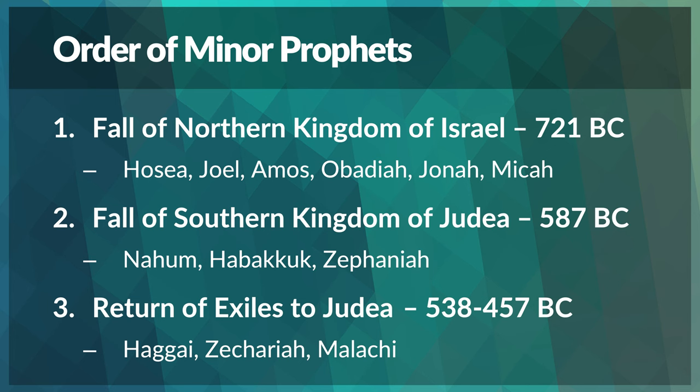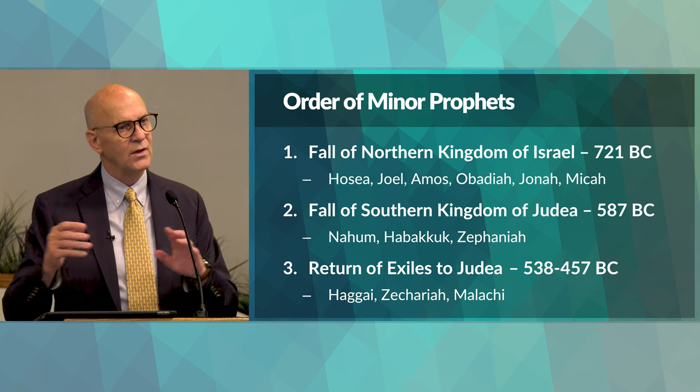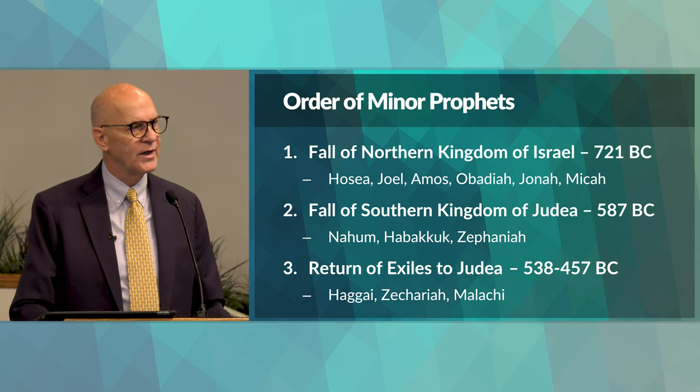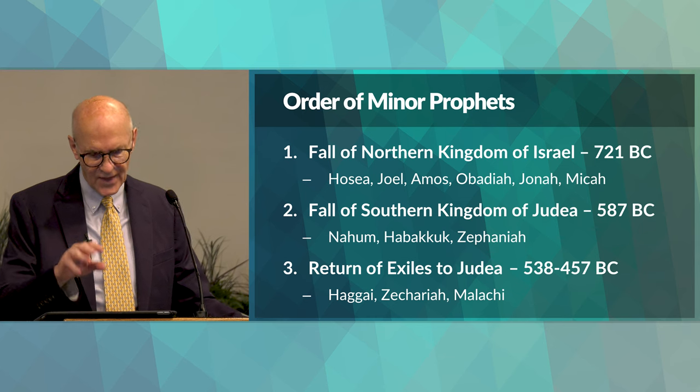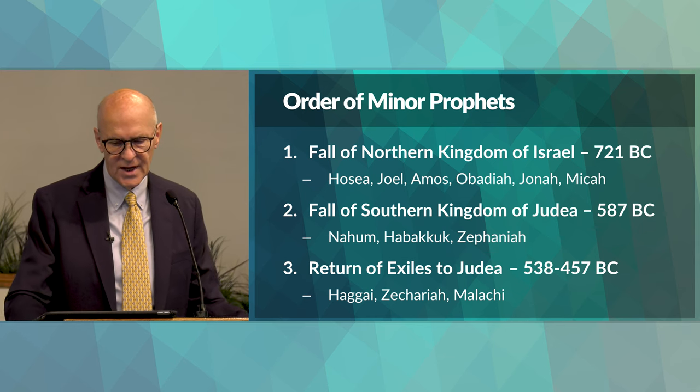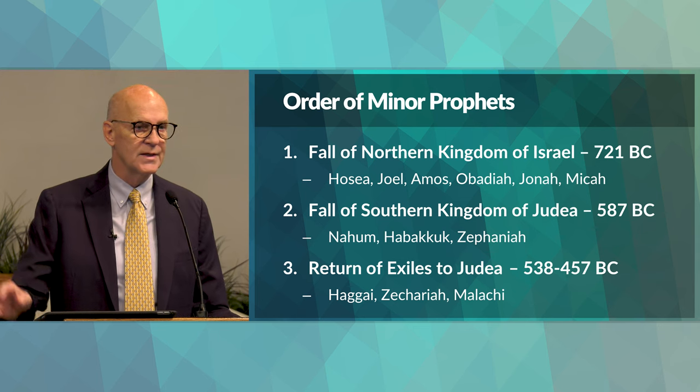We have the prophets Hosea, Joel, Amos, Obadiah, Jonah, and Micah connected with that particular date. The fall of the Southern Kingdom of Judea, 587 BC — we have Nahum, Habakkuk, and Zephaniah. And then the third date is the return of the exiles from Babylon to Judea and Jerusalem, in several waves. The prophets of that era, 538 to 457 BC, are Haggai, Zechariah, and the final one, Malachi.